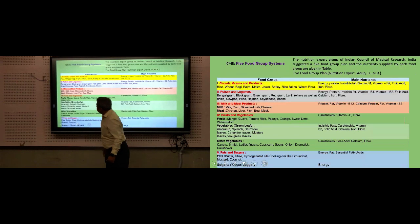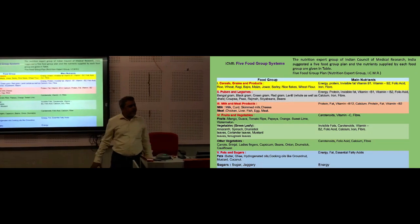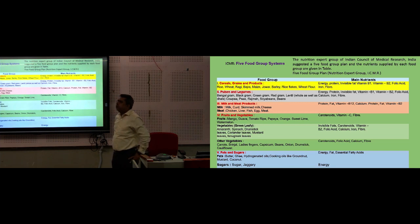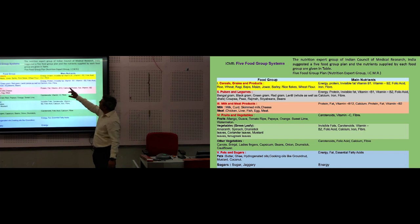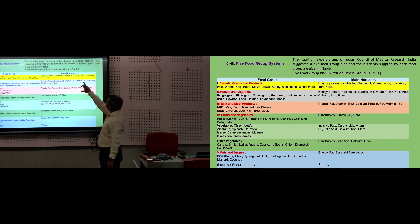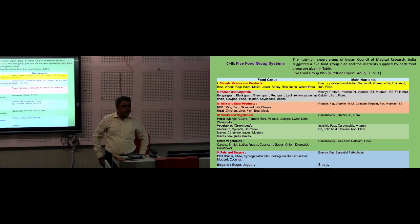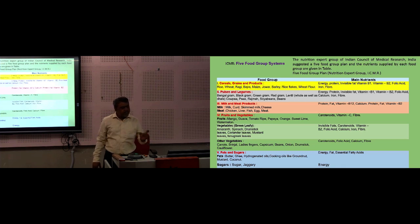Remember that butter is a good source of vitamin A, and animal fat is a source of cholesterol and vitamin E. So one by one, these four groups and five groups are classified. The five group system was given by the Indian Council of Medical Research (ICMR) nutrition expert group. It has been continued in India and includes: cereals and grain products, pulses and legumes, milk and milk products, fruits and vegetables, and fats and sugars.